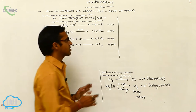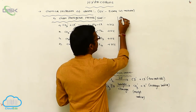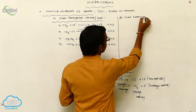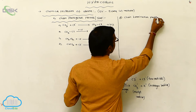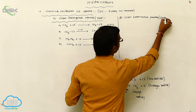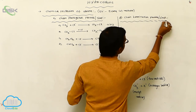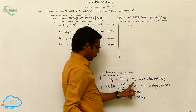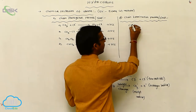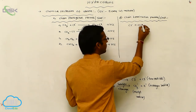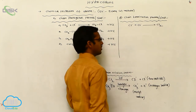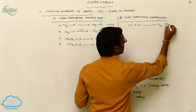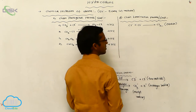After this, the process undergoes termination — that is your third step, chain termination process. In chain termination process, two free radicals are formed. So the chlorine radical is reacted with another chlorine radical and finally gives Cl2.